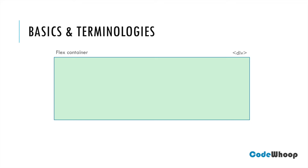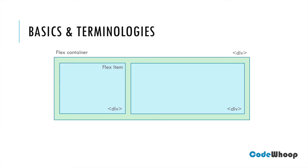Suppose I create another div element inside the FlexContainer — this will be our first FlexItem. Let's create another div element and this will be our second FlexItem. As you might be familiar with, HTML elements are basically divided between inline and block elements, where inline elements flow from left to right, and block elements stack up from top to bottom.